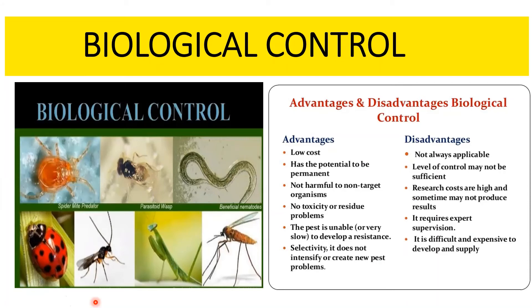The disadvantages of biological control are: the predator introduced may not eat the pest; the predator could eat useful species; the predator's population may increase and get out of control; the predator may not stay in the area where it is needed; and biological control operates over a large area and cannot be limited to individual properties or paddocks.